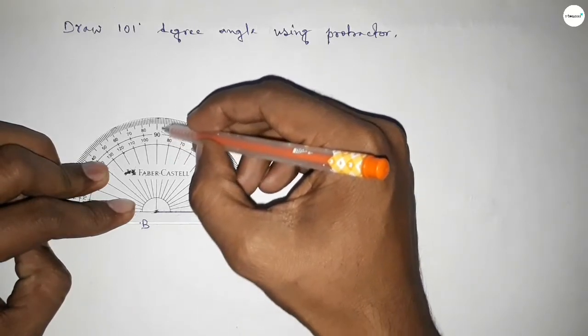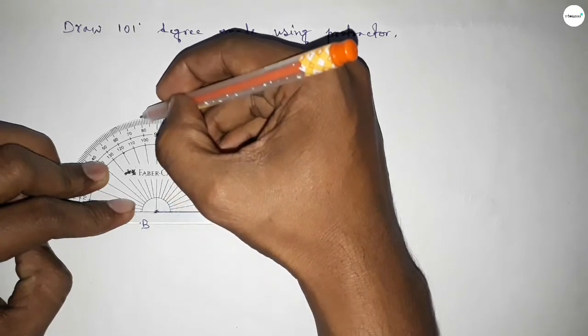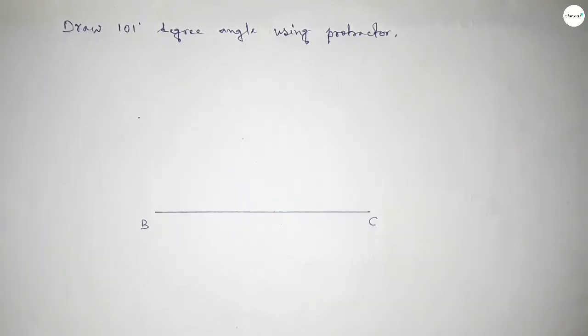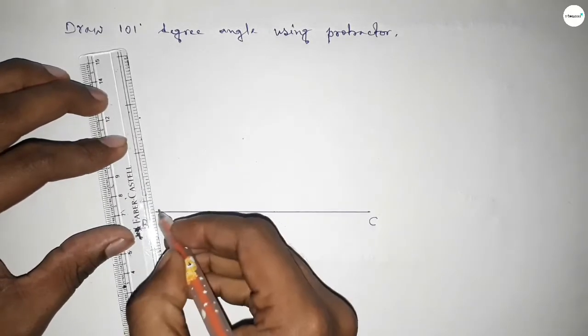60, 70, 80, 90, and this is 100, and this is 101. So this is 101 degrees. Now joining this side to get the 101-degree angle.